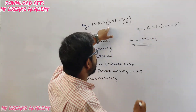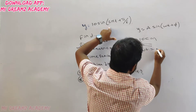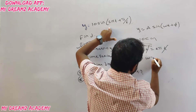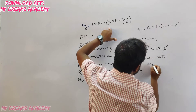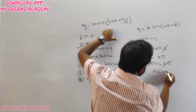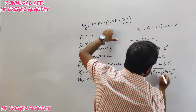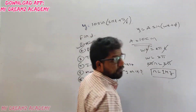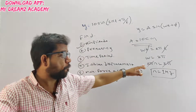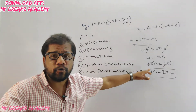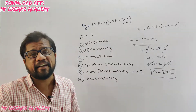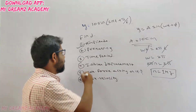For frequency: in sin(ωt), in place of ωt we have 2πt. So ω = 2π. Using the formula ω = 2πn, we get 2π = 2πn, and 2π cancels on both sides, so n = 1 Hz. Frequency is 1 Hz. Second question is done.